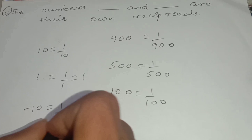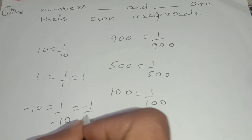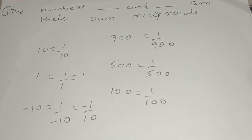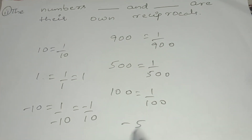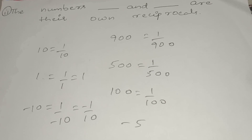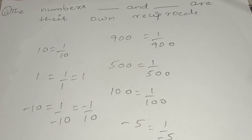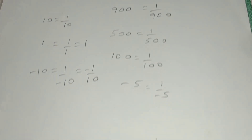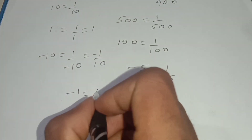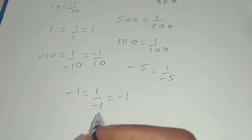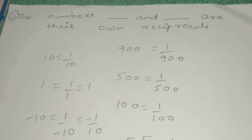If I take minus 10, its reciprocal is 1 by minus 10, which equals minus 1 by 10. If I keep decreasing and take minus 5, its reciprocal will be 1 by minus 5. If I take minus 1, its reciprocal will be 1 by minus 1, which equals minus 1. So the numbers that are their own reciprocals are 1 and minus 1.